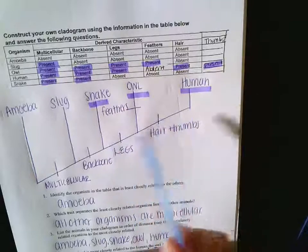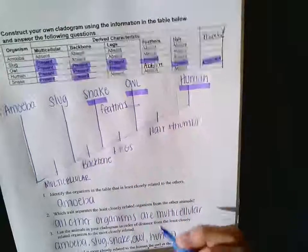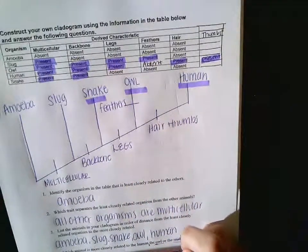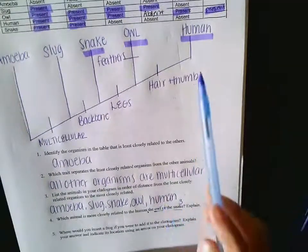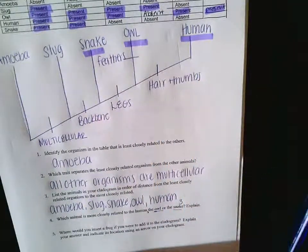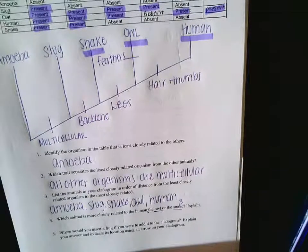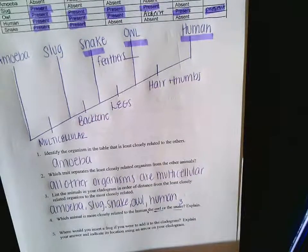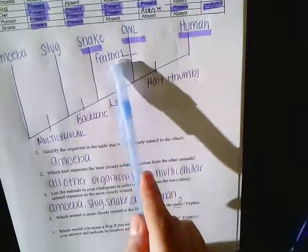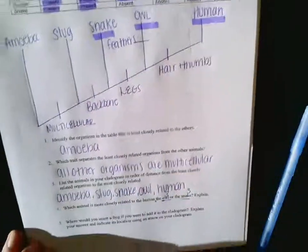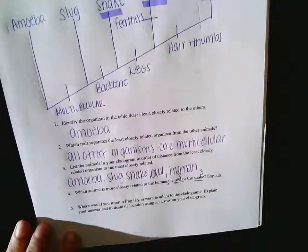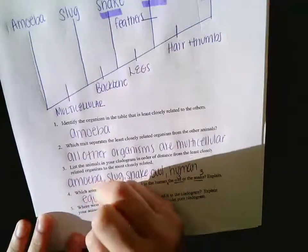Right, because neither of them have feathers, so the owl and the snake have three differences. How many things separate the human and the owl? One, two, three, right. Or you could have said two consistently. So is it more closely related to one over the other? No, so they are actually equally related.